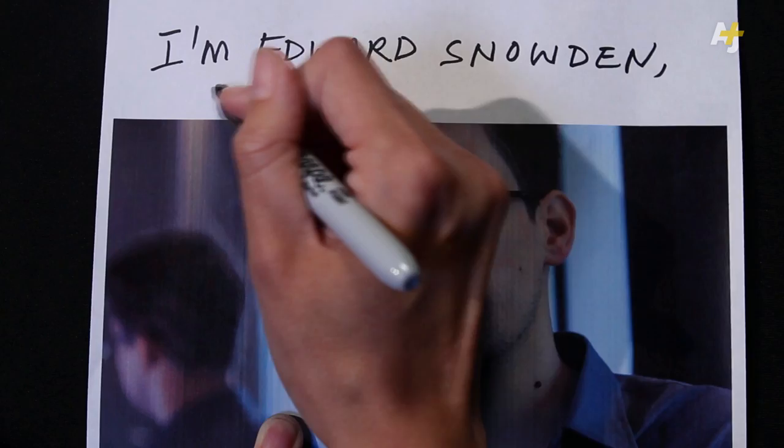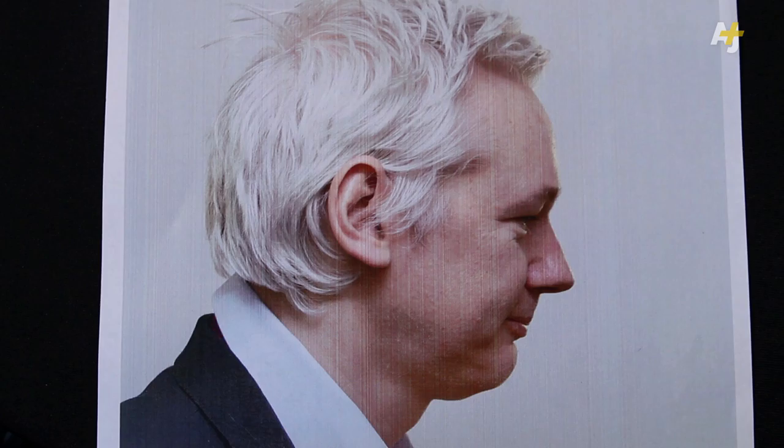People are also divided about the guy who leaked all this information. U.S. Speaker of the House John Boehner called Snowden a traitor, while WikiLeaks founder Julian Assange and famed Pentagon Papers leaker Daniel Ellsberg have called him the opposite. Now it's up to you to decide. Where do you fall on the chart?